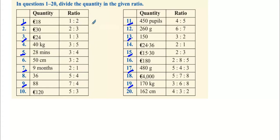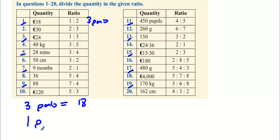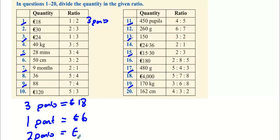You have one part and two parts — that's three parts total. So three parts equals 18. This implies that one part must be six euro, because you divide 18 by three to find one part. And then two parts would be six multiplied by two, to get 12.